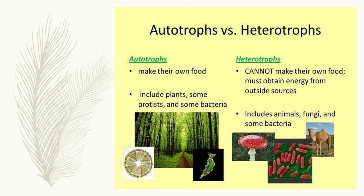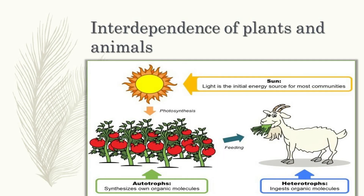Heterotrophs cannot make their own food and obtain energy from outside sources — meaning from other plants and animals. This includes animals, fungi, and some bacteria. In our surroundings, there are so many plants and animals, and they depend on each other for their needs.